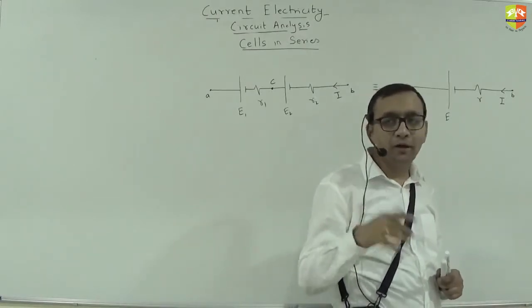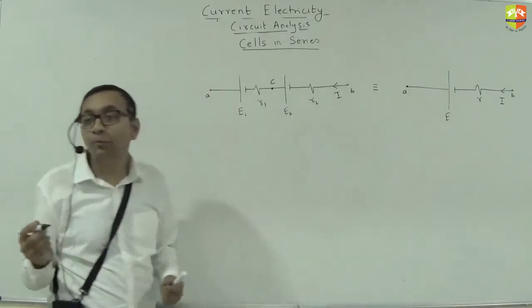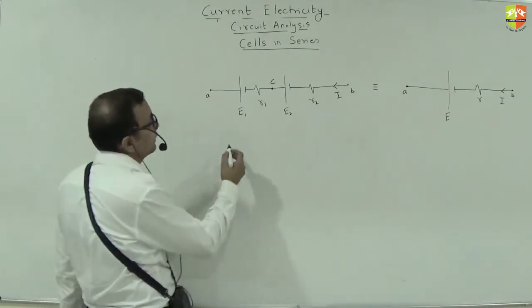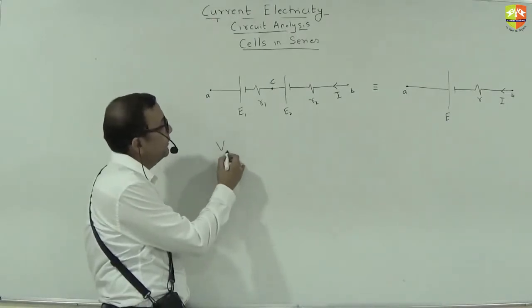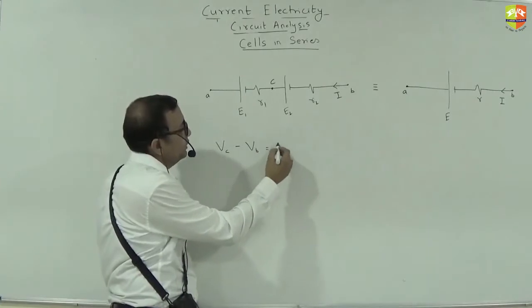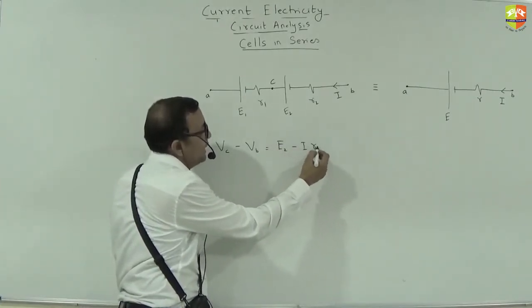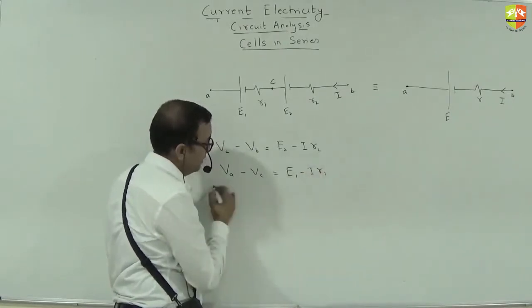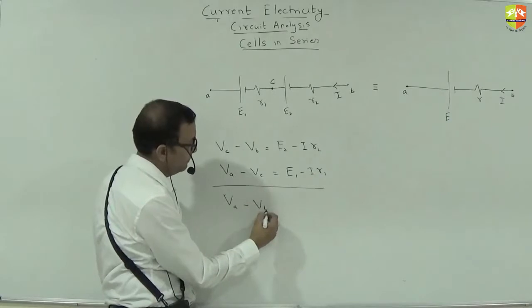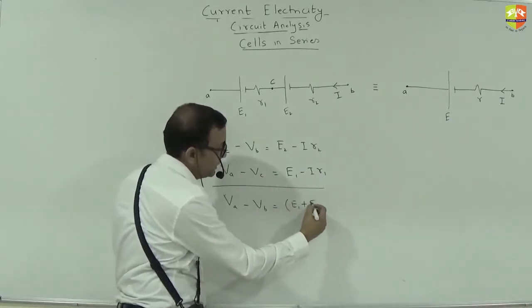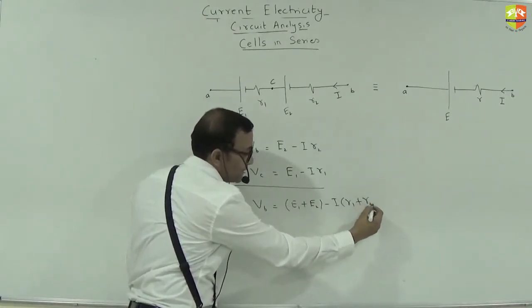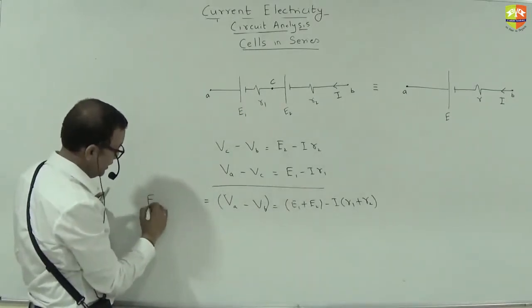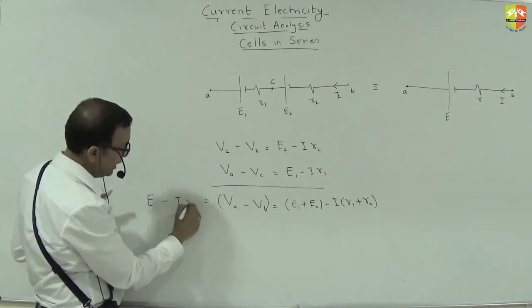VC minus VB is what? E2 minus I R2. And what is VA minus VC? E1 minus I R1. When you add it up, you will get VA minus VB equals to E1 plus E2 minus I times R1 plus R2. Now, VA minus VB can also be written as from that circuit: E minus I into R.